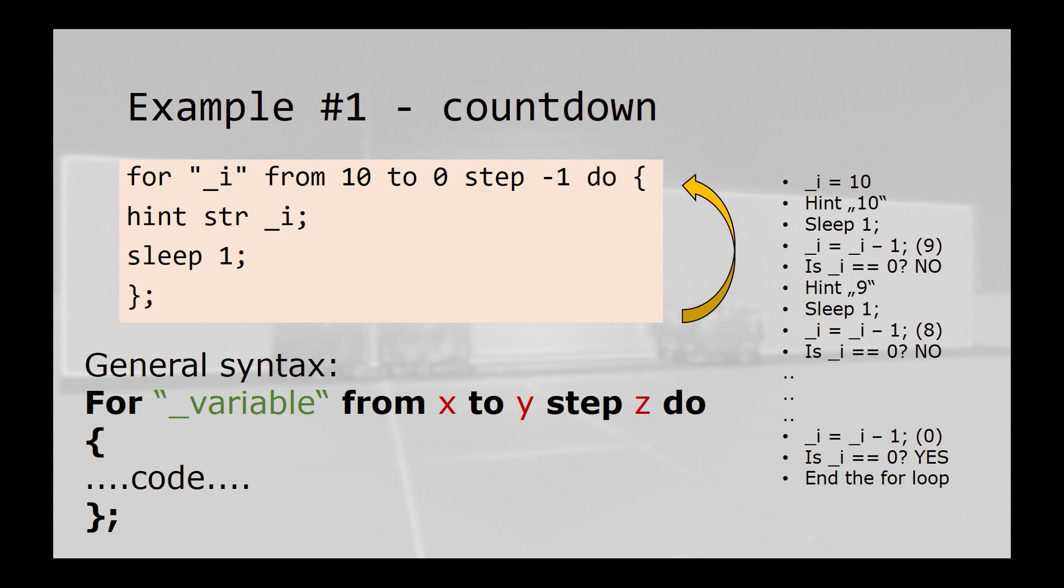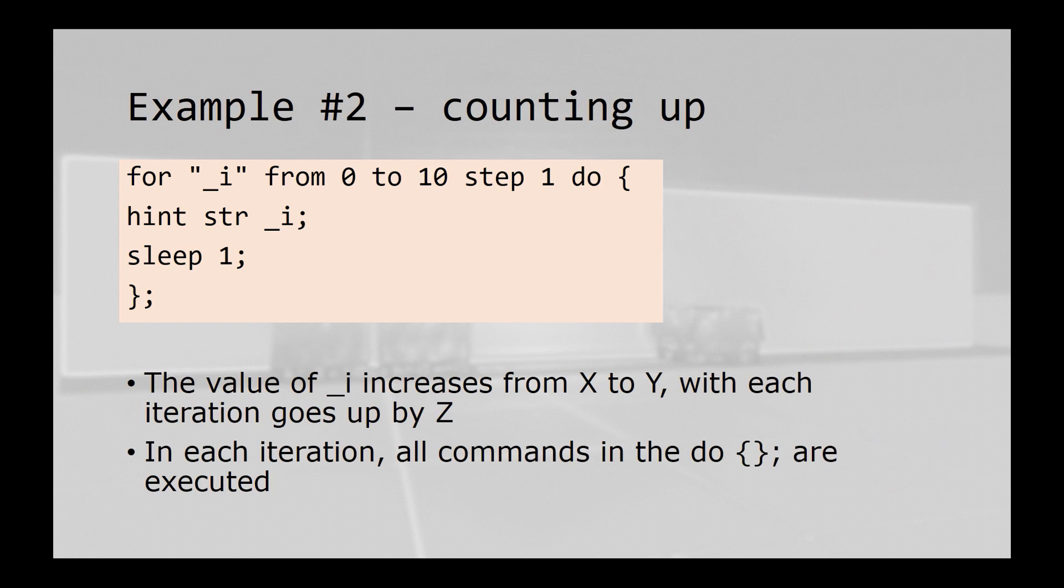We can do the same to go the other way and increase the value. We start at 0, and go all the way up to 10, where each step, each cycle, adds a 1 to the value of i.